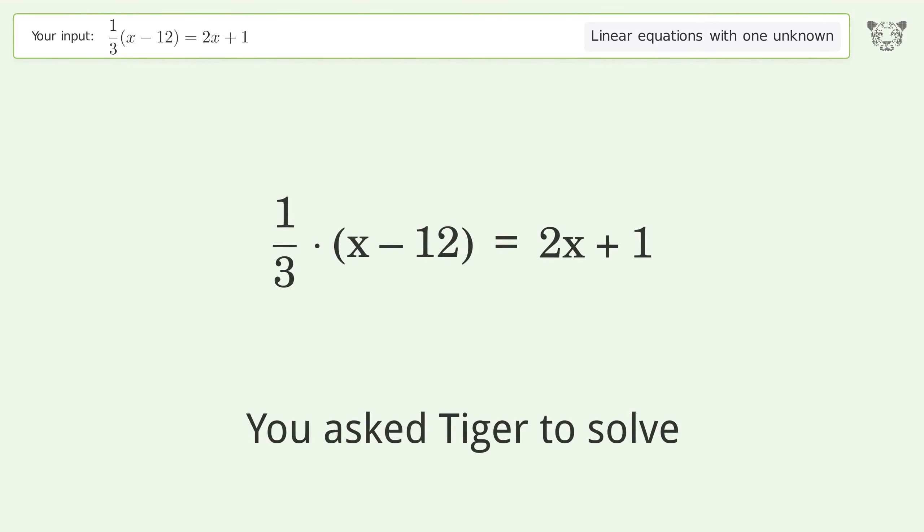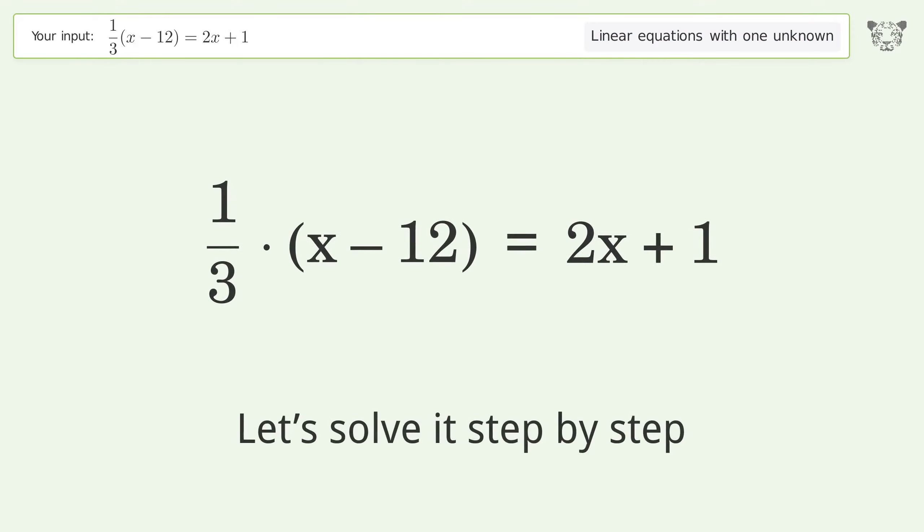You asked Tiger to solve this. This deals with linear equations with one unknown. The final result is x equals negative 3. Let's solve it step by step. Simplify the expression.